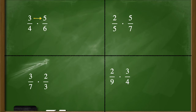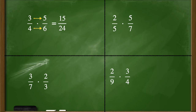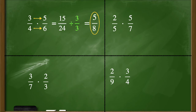Step one: multiply the numerators. Three times five is fifteen. Then multiply the denominators — four times six gives me twenty-four. I'm going to think: do fifteen and twenty-four share any common factors? They do — they both share a three, so I'm going to divide each of them by three. Fifteen divided by three is five, and twenty-four divided by three is eight. So my final simplified answer to three-fourths times five-sixths is five-eighths.